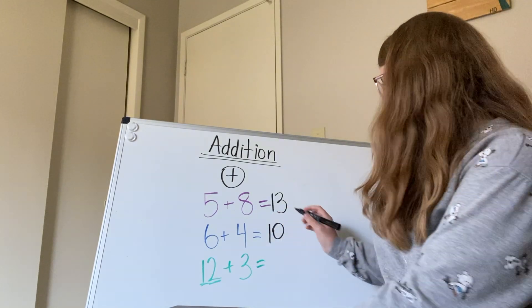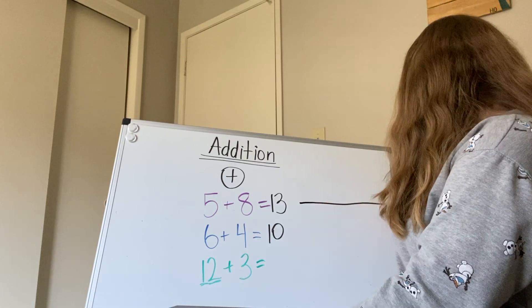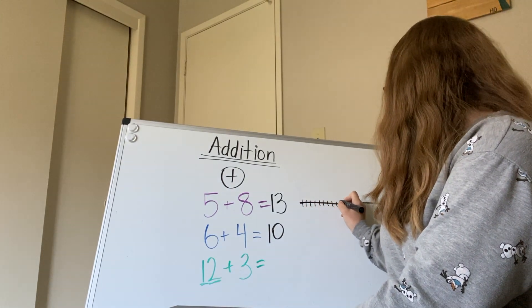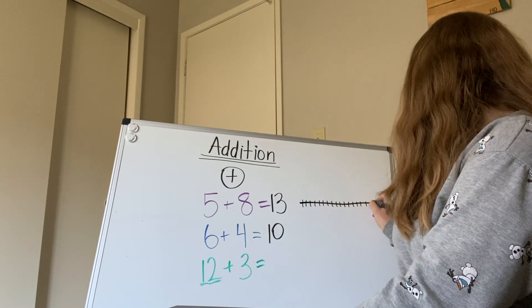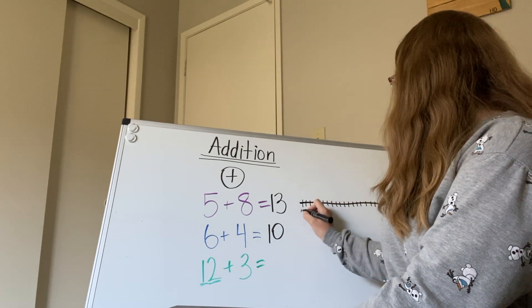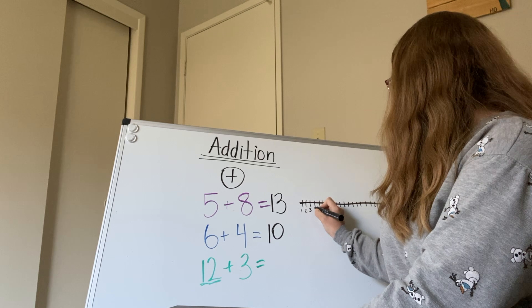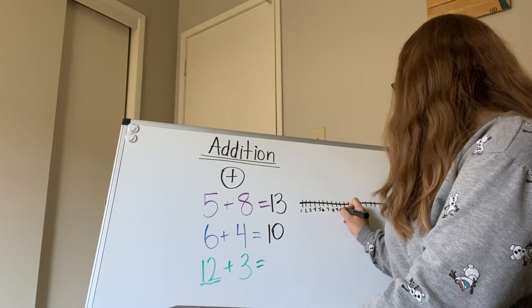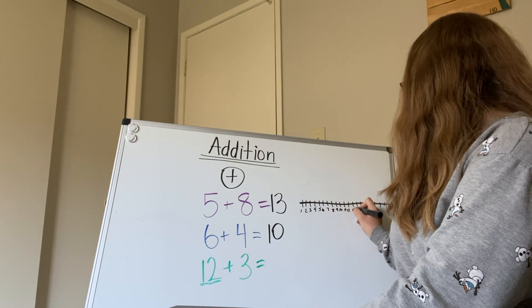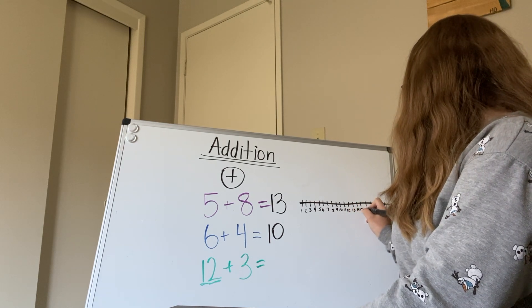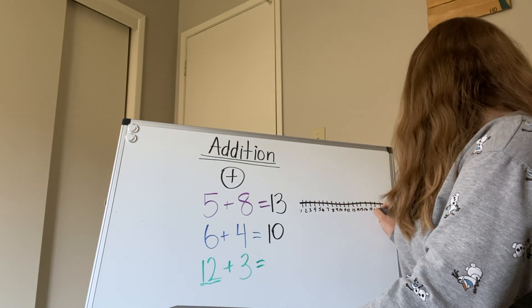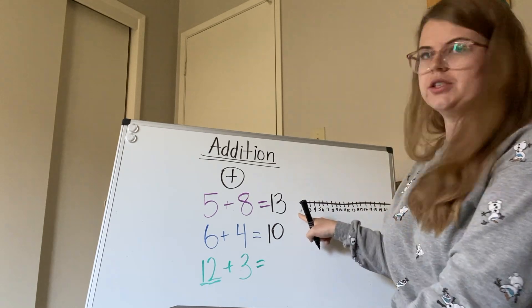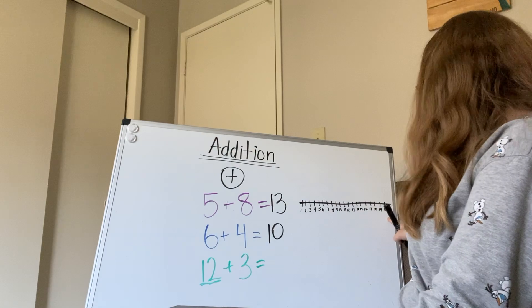So we have a number in the tens place and in the ones place to solve 12 plus three, I'm going to draw a number line. So I'm just going to draw a number line here. And label my number line.